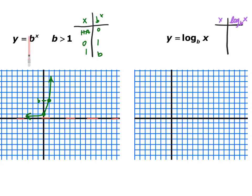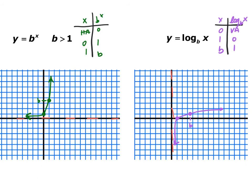In a previous section we graphed exponentials y equals b to the x, with horizontal asymptote at y equals 0, and key points (0,1) and (1, b). Since logarithms are inverses, inputs and outputs switch. So for the logarithmic parent function, x-coordinates are 0, 1, and the base, while y-coordinates are the vertical asymptote, 0, and 1. The horizontal asymptote reflects to become a vertical asymptote at x equals 0, with points (1,0) and (base, 1).